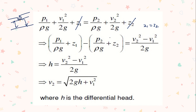Rearranging, we get all pressure terms on one side and velocity terms on the other: P1/ρg − P2/ρg = V2²/2g − V1²/2g. Since P/ρg is pressure head, P1/ρg − P2/ρg is the difference in pressure head, which is given by the manometer reading H. So: H = (V2² − V1²) / 2g.